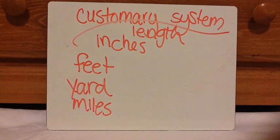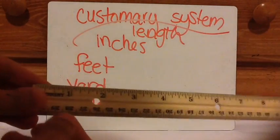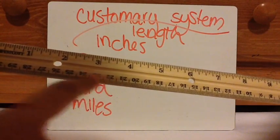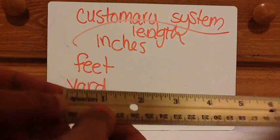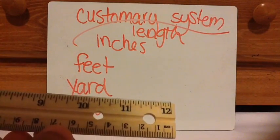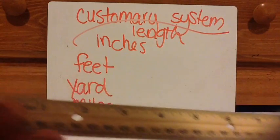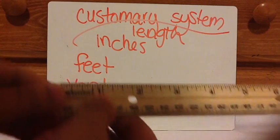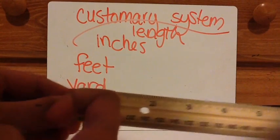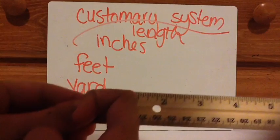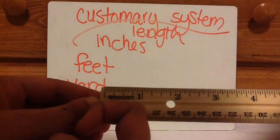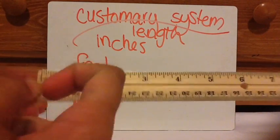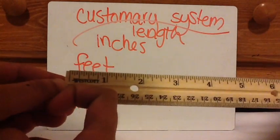So inches — this side of the ruler. Inches are actually bigger than centimeters, which are on the other side. The side of the ruler that goes up to 12 is inches; the side that goes up to 30 is centimeters. I always tell my students that if you use like this part of your finger, that is about an inch. That's a good benchmark — one of these is an inch.